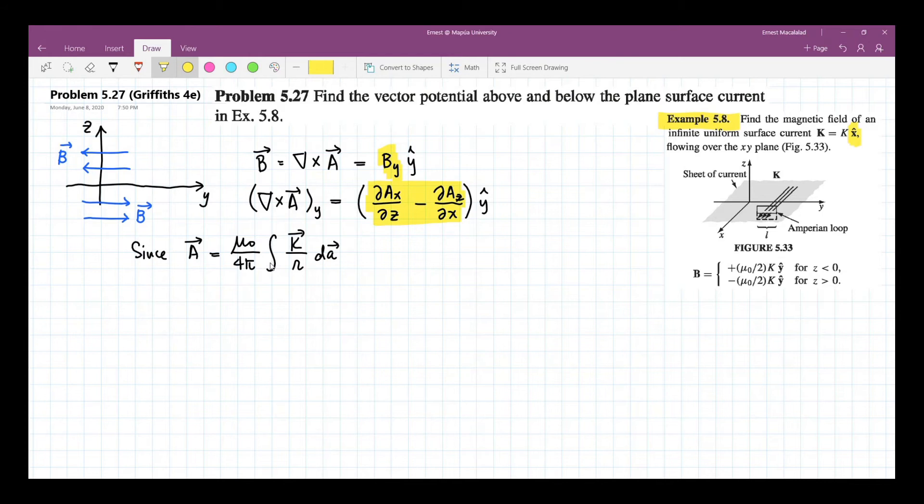So that means whatever the direction of k is, that's the direction of your A. That means it's also along the x direction. In other words, your A doesn't have a z component. A is only along the x component, whether that's parallel or antiparallel we will determine later.